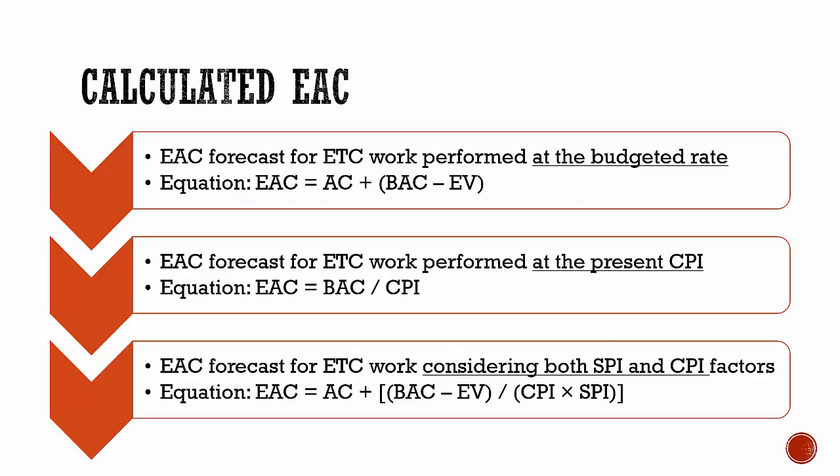The most often used forecasting approach is a manual bottom-up summation by the project manager and the project team. The project manager's manual EAC can be compared with a range of calculated EACs representing various risk scenarios. When calculating EAC values, the cumulative CPI and SPI values are typically used. The Earned Value Management method can quickly provide many statistical EACs.